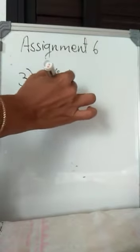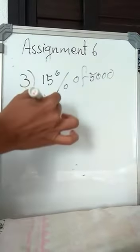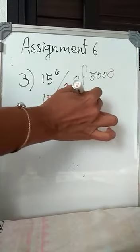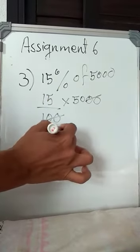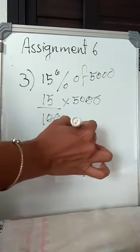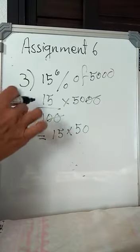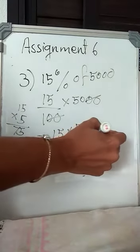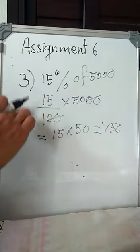Third one is 15% of 5000. So this you will write as 15 by 100 into 5000. Now 5000, two of the zeros you can cut. The remaining will be 15 into 50. Now 15 into 5 we can find, it will be 75. So 15 into 50 will be 750. So 750 is the answer.